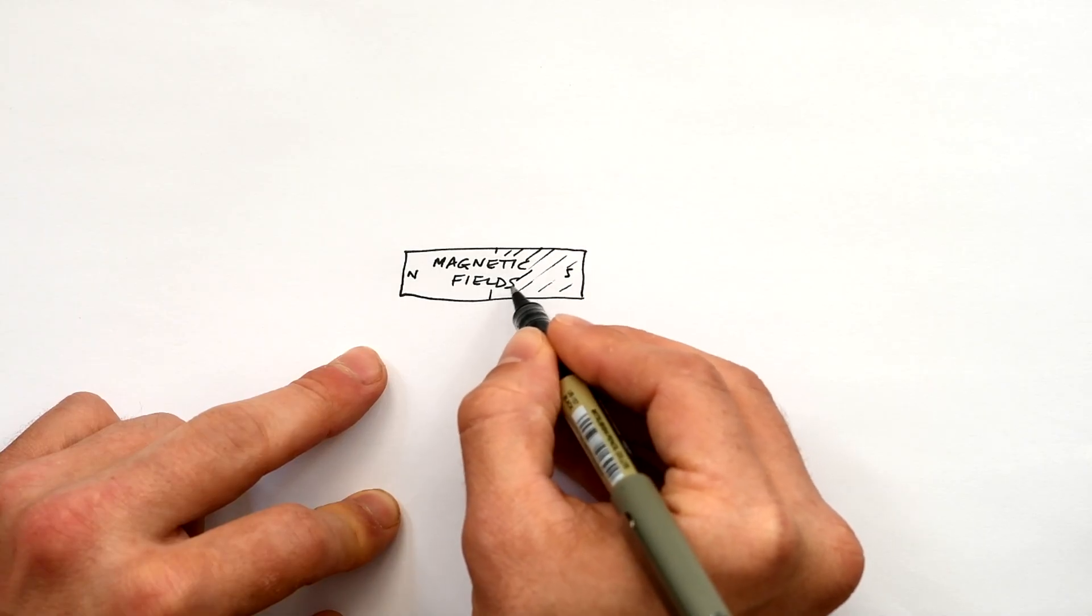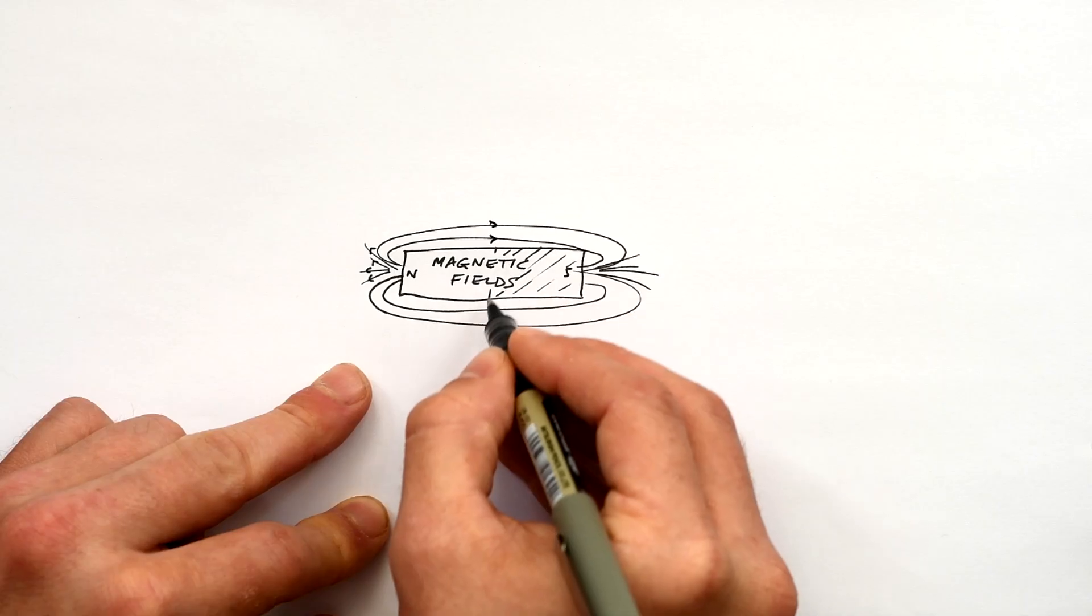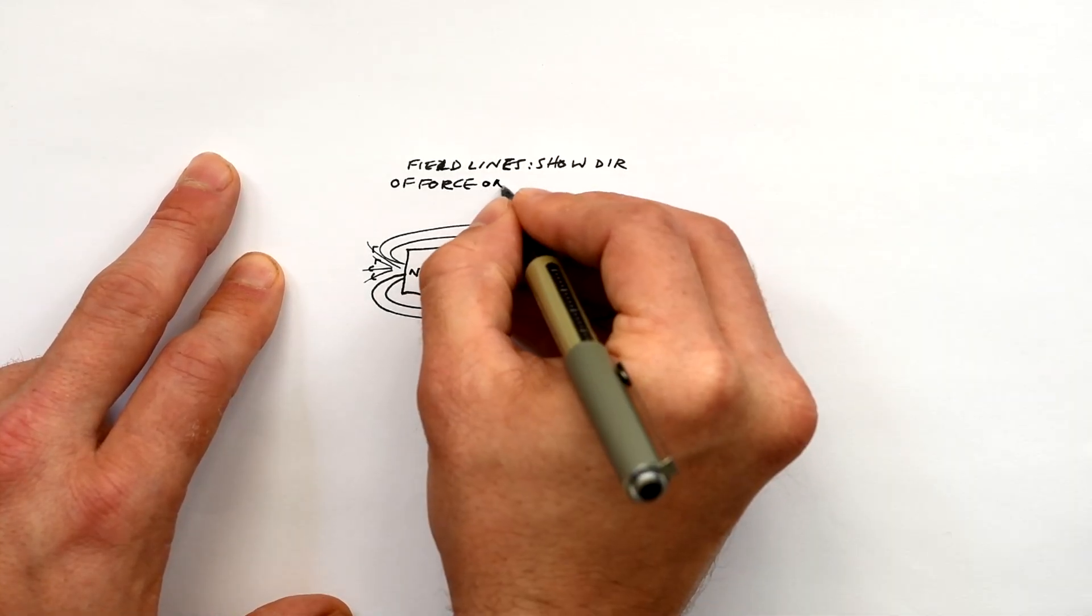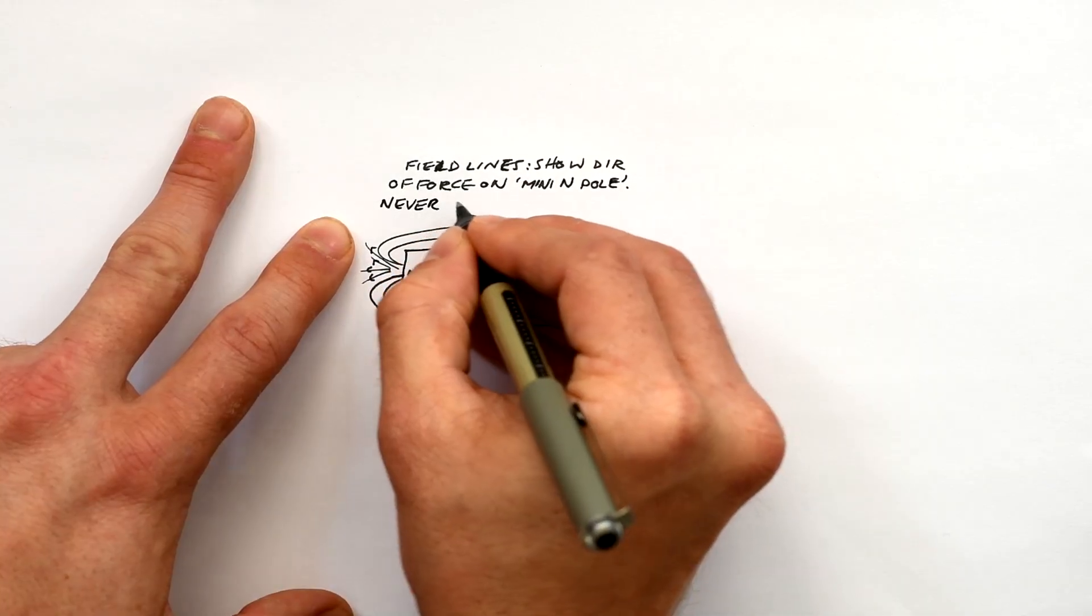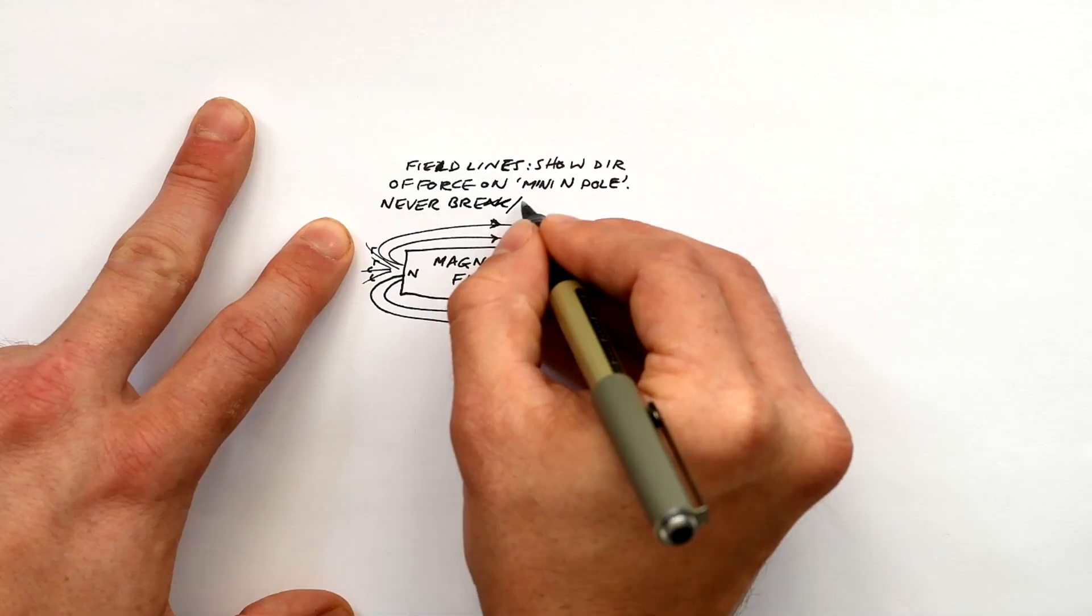Here's a magnet with north and south poles, actually their full names are north-facing and south-facing poles. Here I've drawn some field lines to represent the invisible field around a magnet, and they show the direction of the force on a mini north pole as it were.